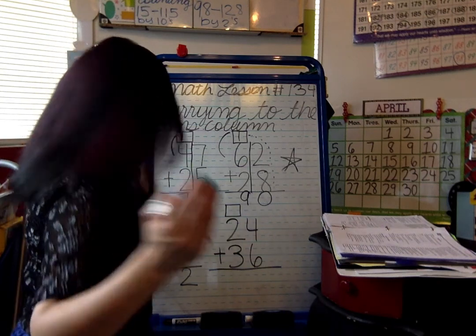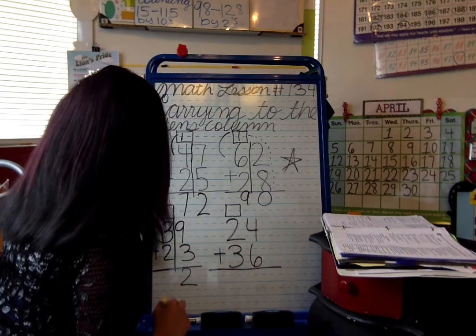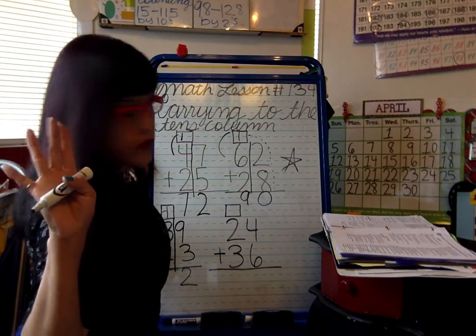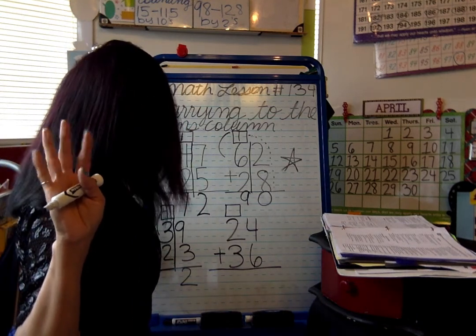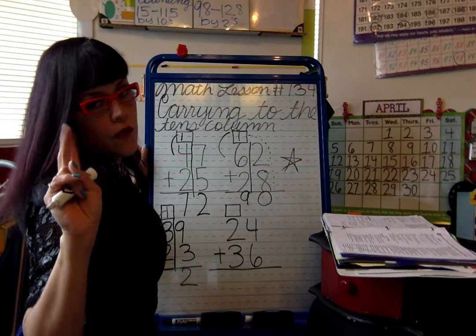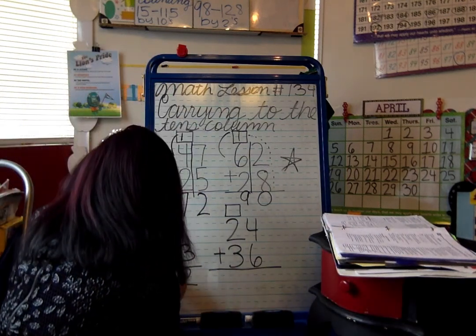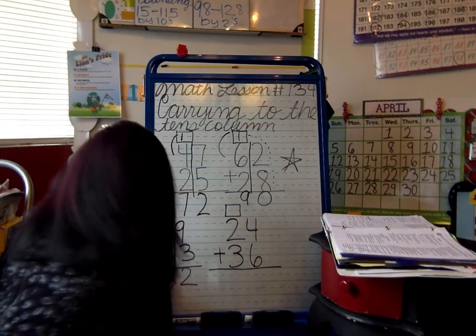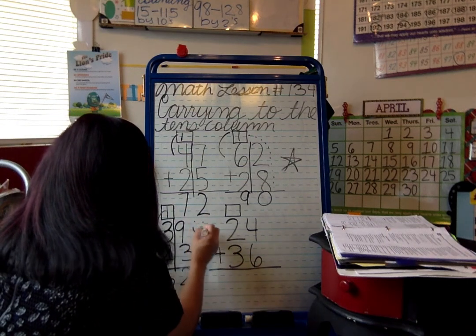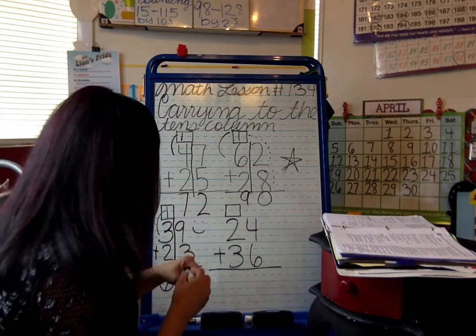What is one plus three? Four — show me four fingers. Keep four in your head, then four plus two is six. The answer is 62. If you got 62, give yourself a happy face — good job! These are fun, they're not bad.